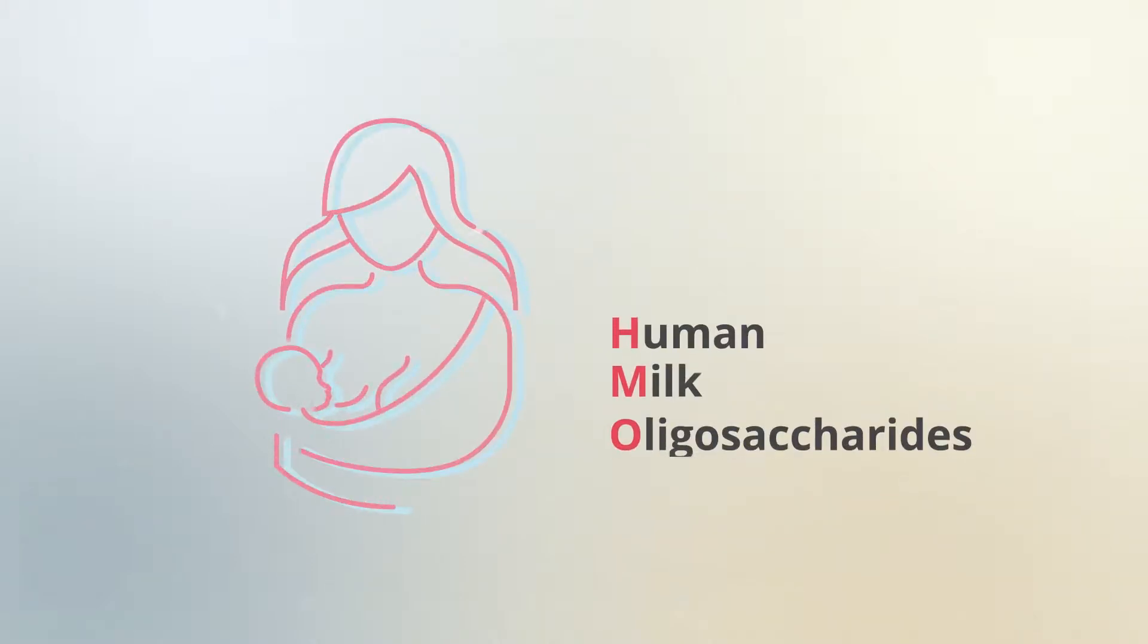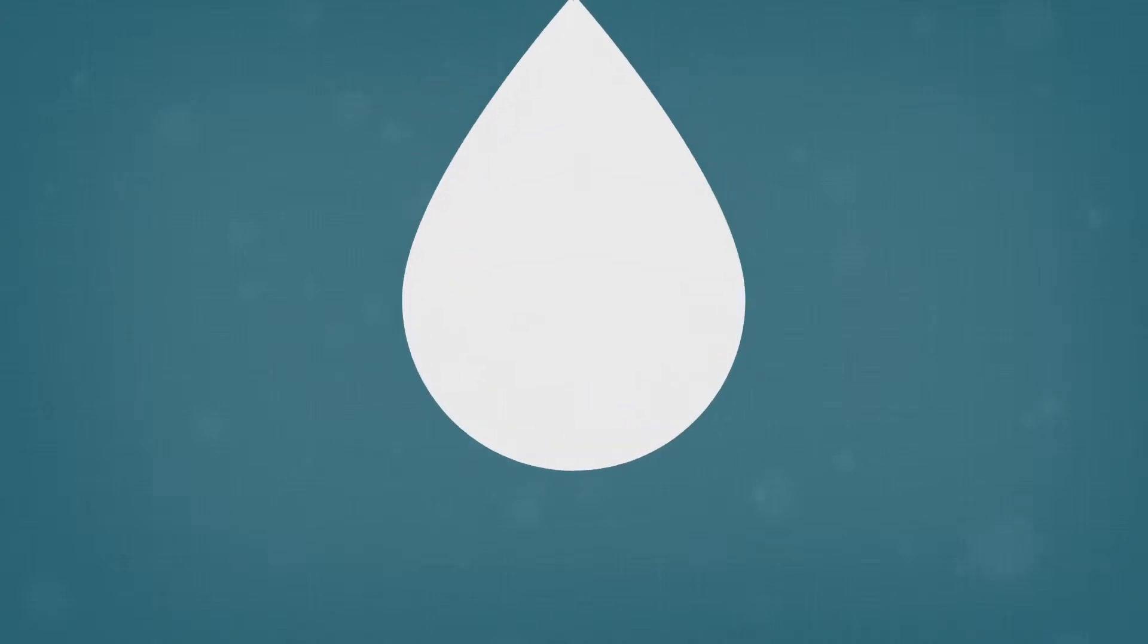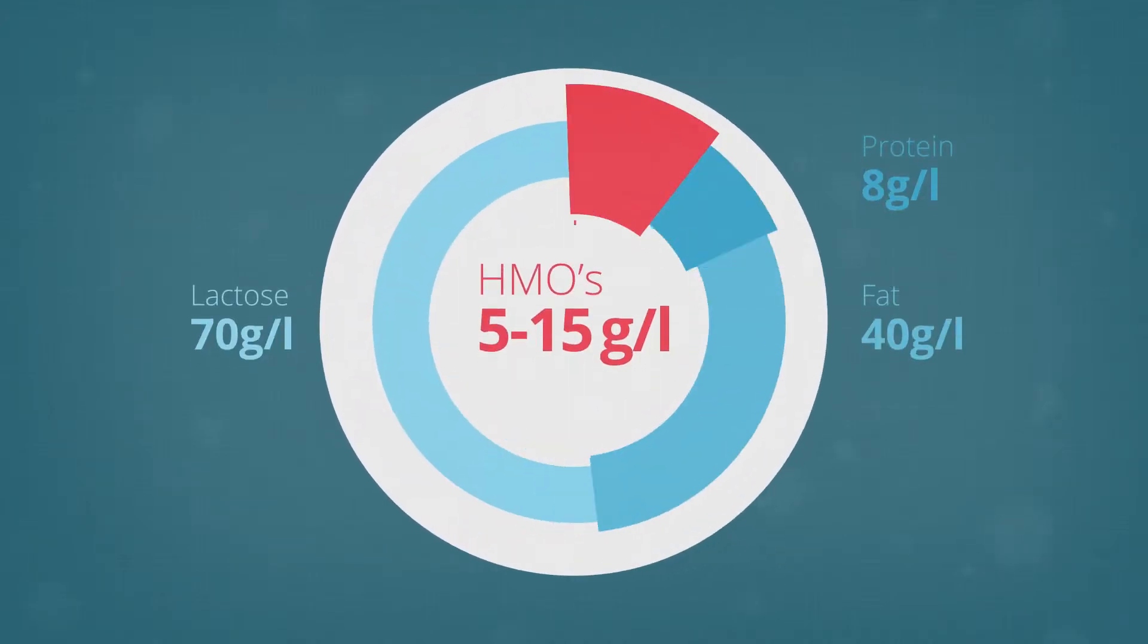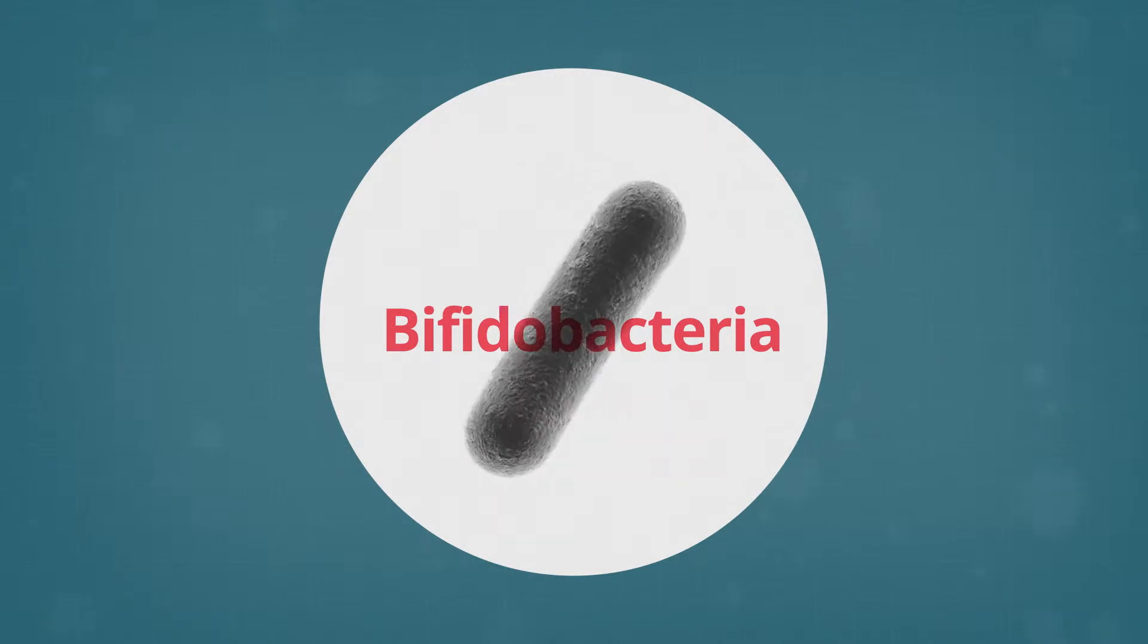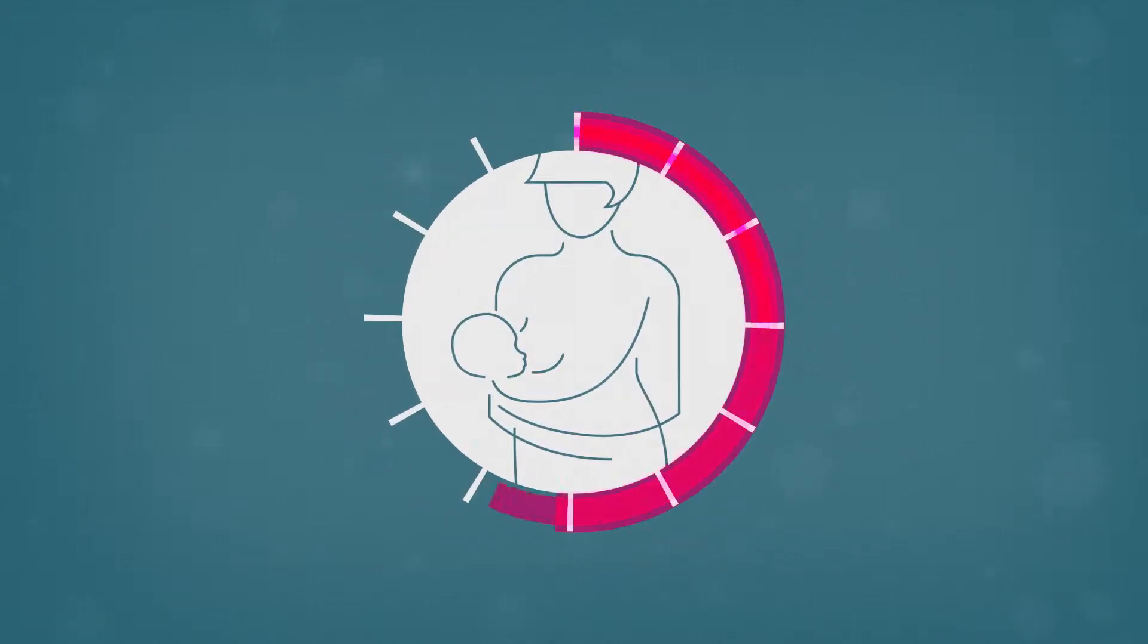Human milk oligosaccharides, HMOs. Rich in nutrients including specific sugars and good bacteria, bifidobacteria, mother's milk composition changes throughout the breastfeeding period to adapt to the infant's needs.